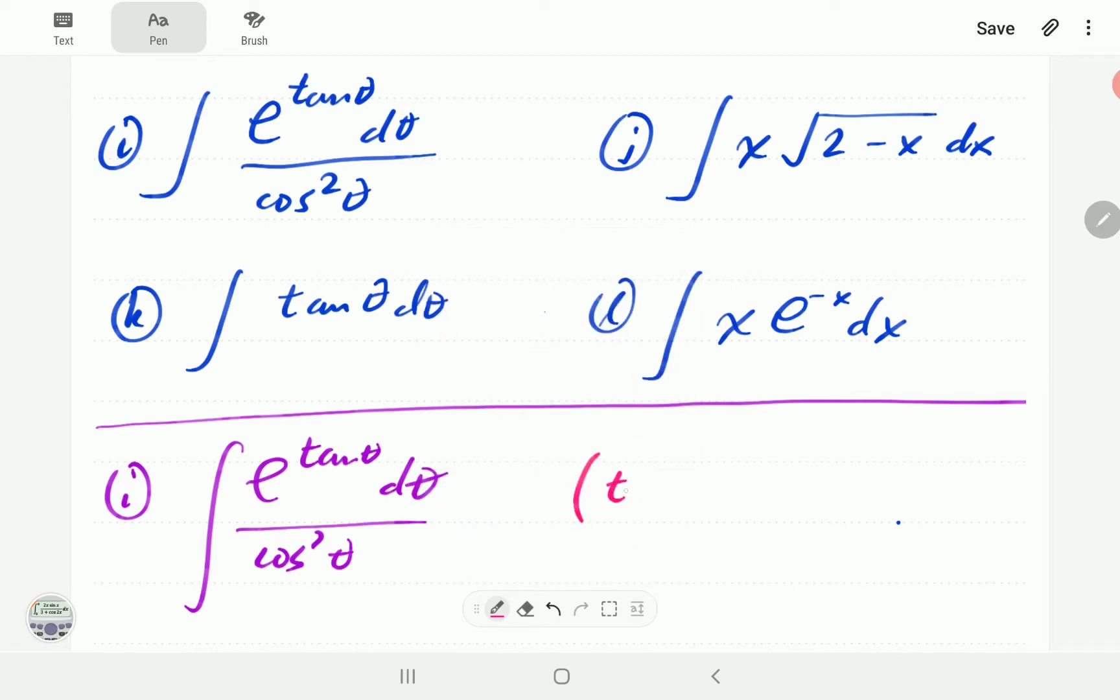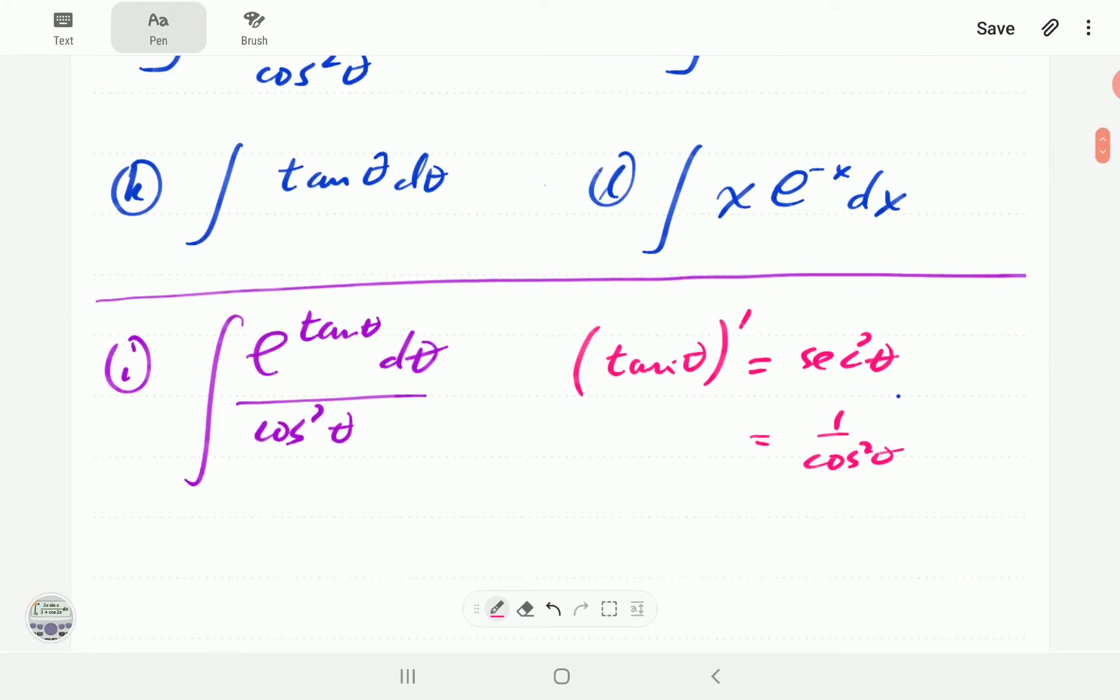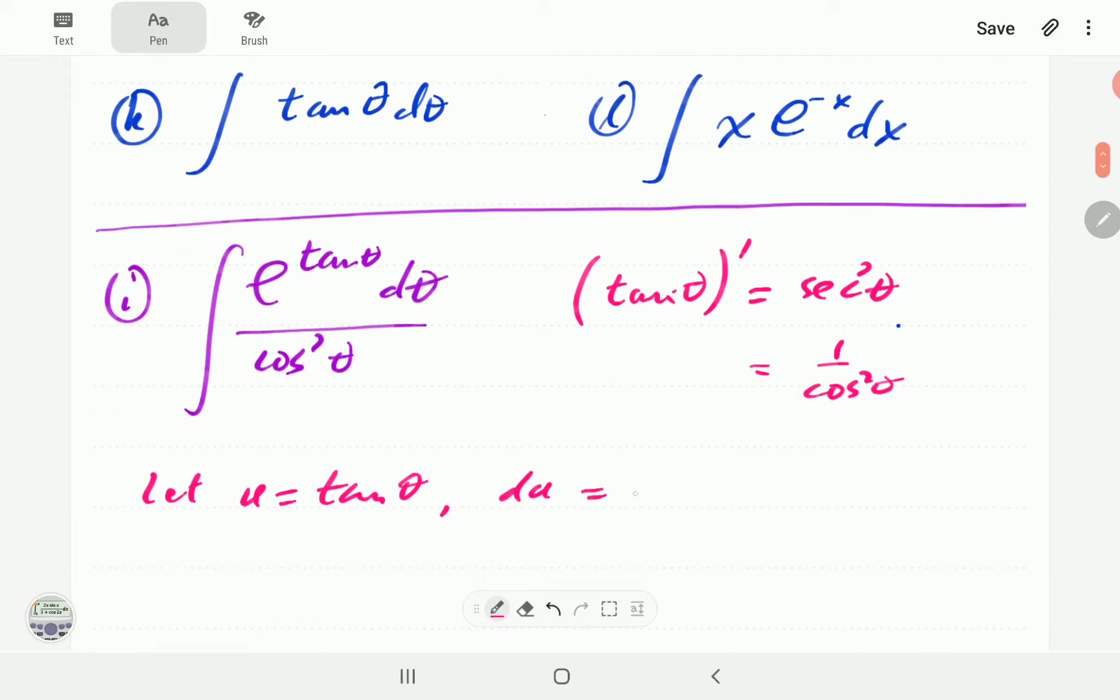Let's see how this works. If we take tan θ, the derivative of tan θ is sec²θ. Does that look like cos²θ in the denominator? Yes, it does. Sec²θ is 1 over cos²θ. So that means our u is going to be tan θ. So du is sec²θ dθ or dθ all over cos²θ.